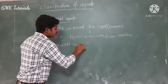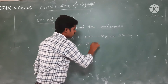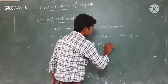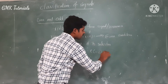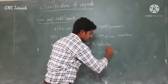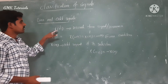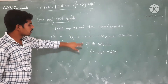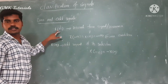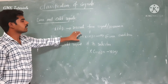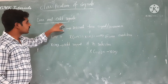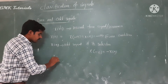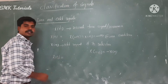The signal x of n is an odd signal if it satisfies x of minus n is equal to minus x of n. If x of n satisfies the first condition then it is an even signal; if x of n satisfies the second condition then it is an odd signal. So based on these conditions the given sequence is classified as even or odd.